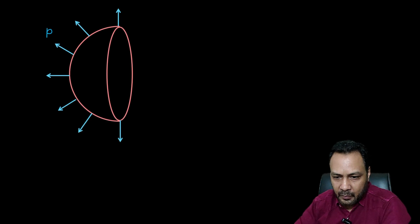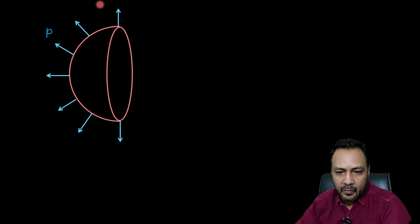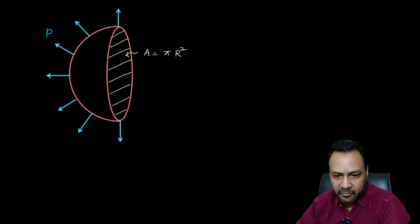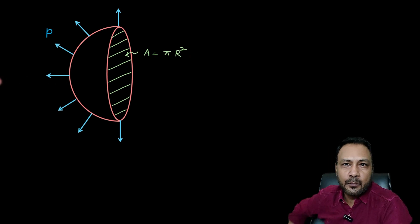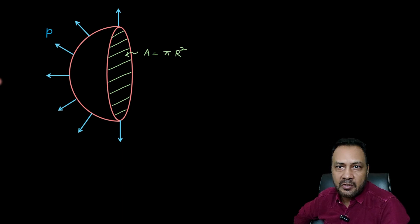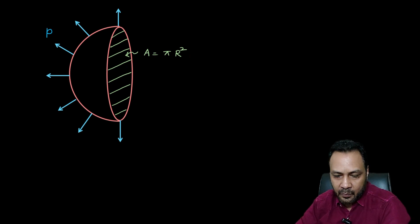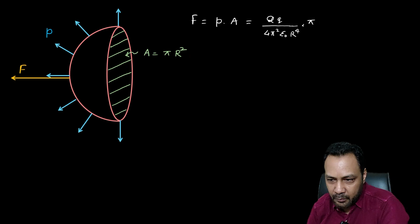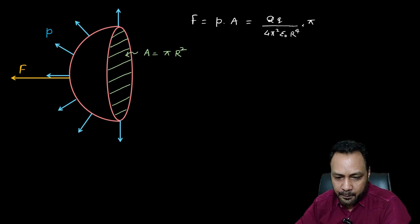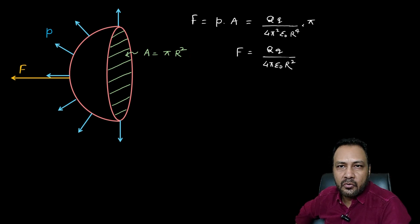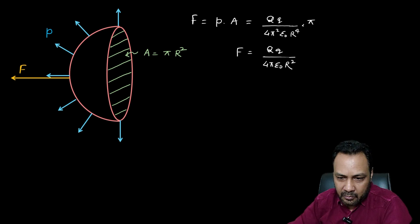There is a uniform outward electrostatic pressure at all points of the bigger hemispherical shell's surface. Using the fluid mechanics technique, the net force equals pressure times the projected area in the required direction. The area projection of the curved hemispherical surface perpendicular to the axis is πR². Therefore, F = P · πR² = Qq / (4π ε₀ R²).